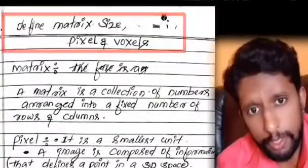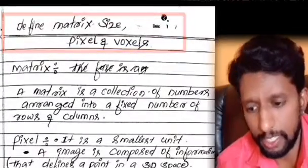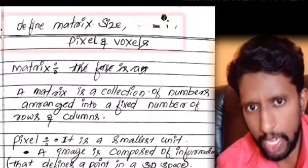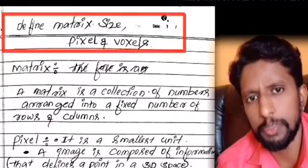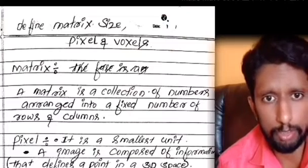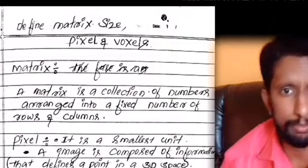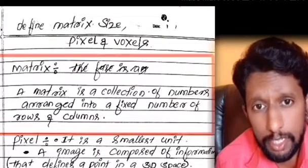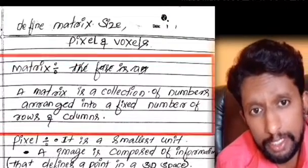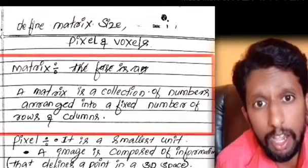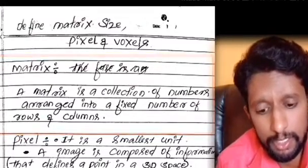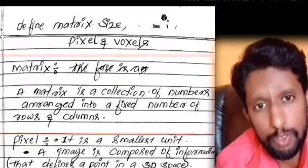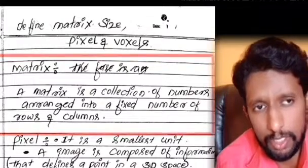A matrix is a collection of numbers arranged into a fixed number of rows and columns. In CT imaging, the matrix defines the grid structure of the image, and the rows and columns are fixed.